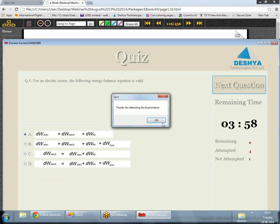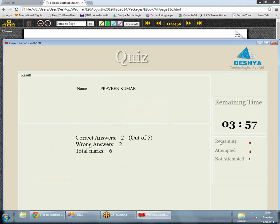It shows that I have finished my quiz and this is the analysis. Out of five questions, I answered two correct and two wrong, and one I did not attempt, which you can see as not attempted. The total marks that I scored is six.